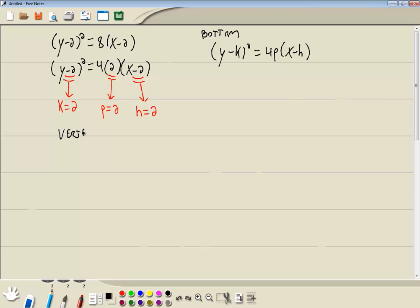Okay, now it doesn't matter which formula you're using. The vertex is always h, k, which will be 2, 2.